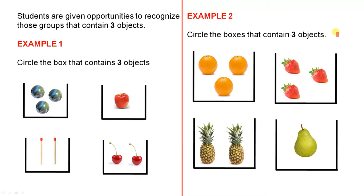The next example, circle the boxes that contain 3 objects. When they see the word boxes, they'll probably understand that we have more than one box. So after looking carefully, they would circle that box and this one. And they'd be given many more opportunities to do examples like this.